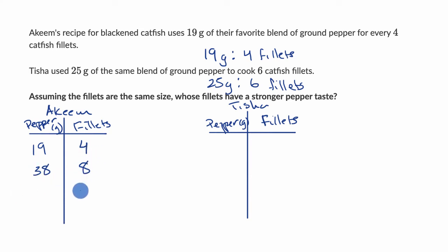If we were to add another four fillets to that, so now we're at 12 fillets, well, what's that going to be? To go from four to 12, you multiply by three. Well, that means you would take that 19 and multiply by three. Let's see, that would be 30 plus 27, that would be 57. Maybe this is enough. Let's see what we can do for Tisha right over here.